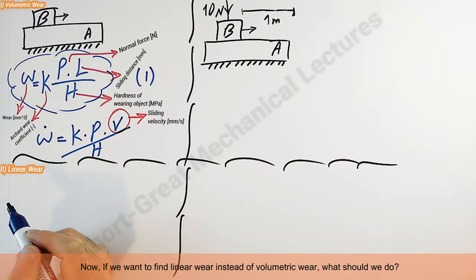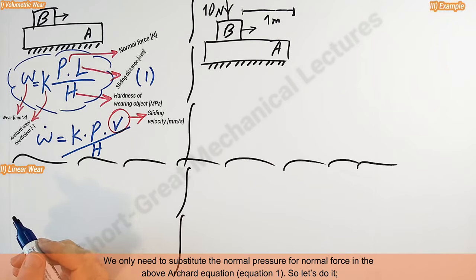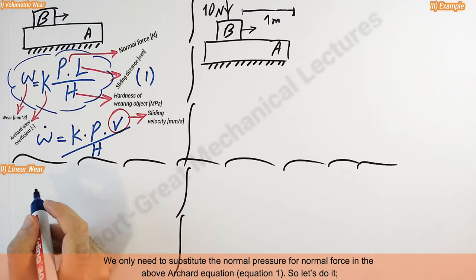If you want to find linear wear instead of volumetric wear, what should we do then? We only need to substitute the normal pressure for normal force in the above Archard equation, equation 1. So let's do it.